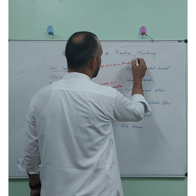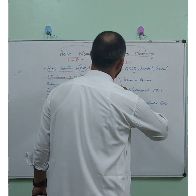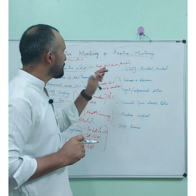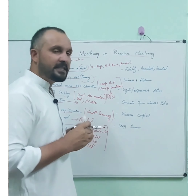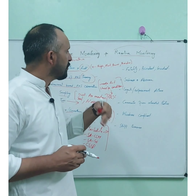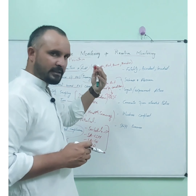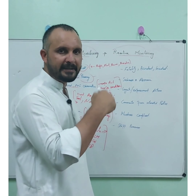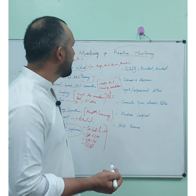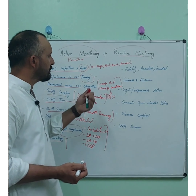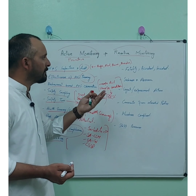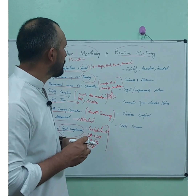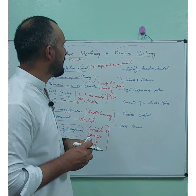Reactive monitoring — as the name suggests — refers to the actions we take after something has already happened. Let's suppose an accident or incident occurs. The steps we take after that fall under reactive monitoring. We monitor certain things and improve them so that next time there is no recurrence of any accident or incident based on what has already occurred before.